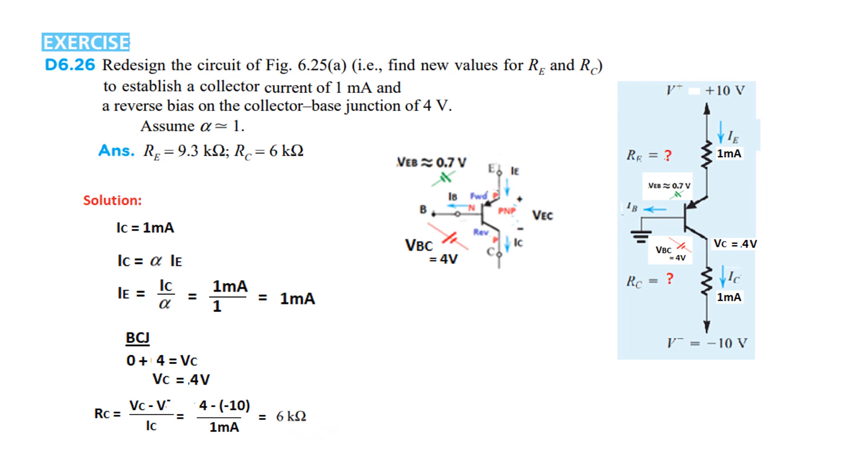Now, we come to the base emitter junction or emitter base junction. 0, minus 0.7, is equal to VE. So, VE is equal to 0.7. VE 0.7. We can now calculate RE from this loop. So, RE is 10 minus 0.7 divided by 1 milliampere is 9.3 kilo. So, I hope you have been able to follow this and you should be able to solve such type of question of especially PNP transistors. Thank you.